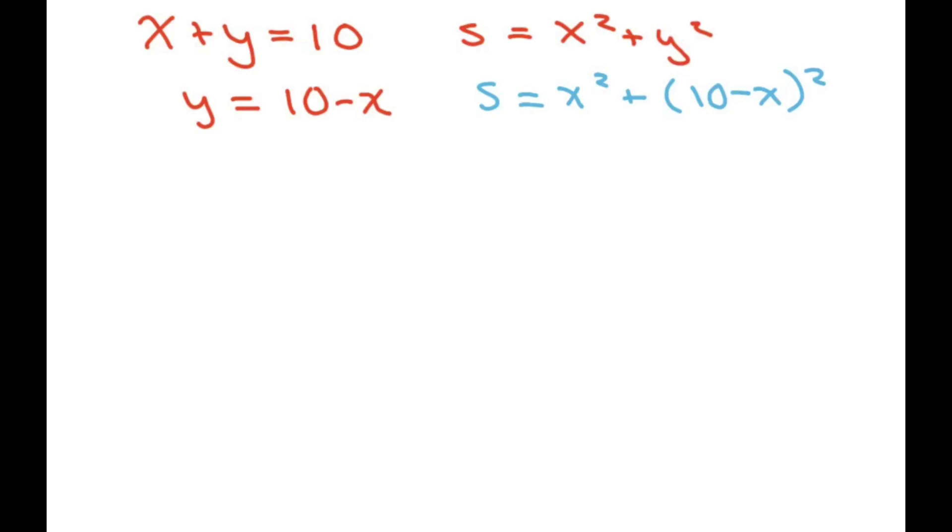Now when I clean this up, I get this is x squared plus, I'm going to just foil this out, 100 minus 20x plus x squared. And you combine all this and put it in standard form. You get 2x squared minus 20x plus 100.